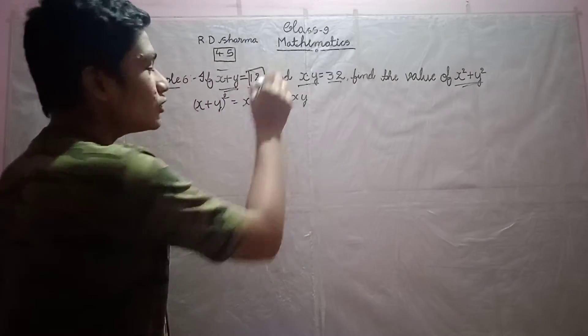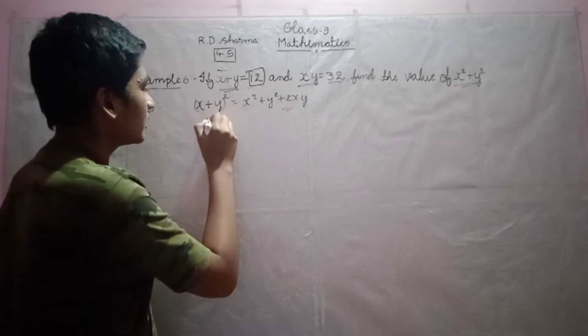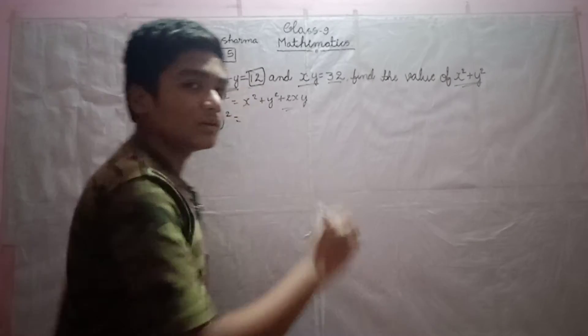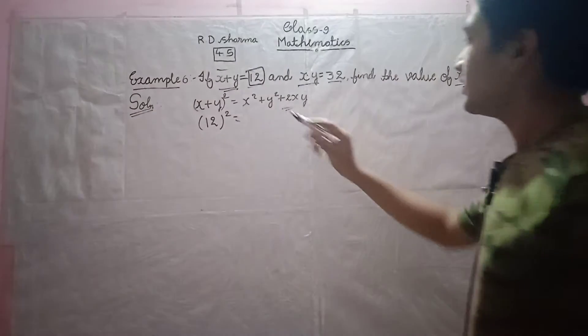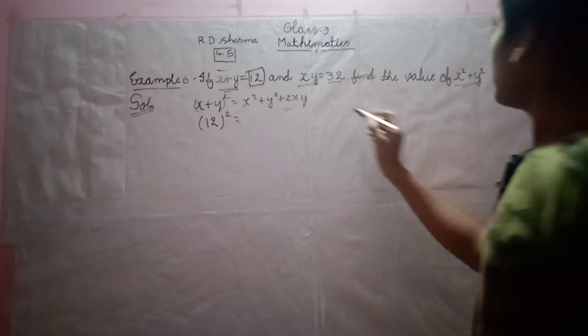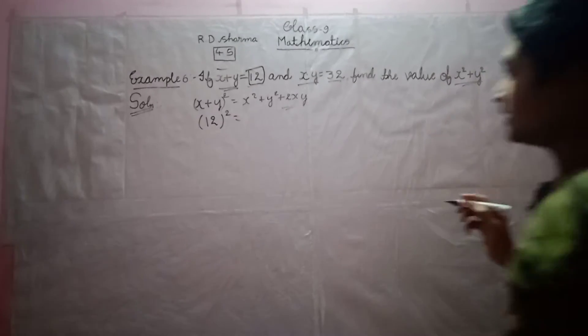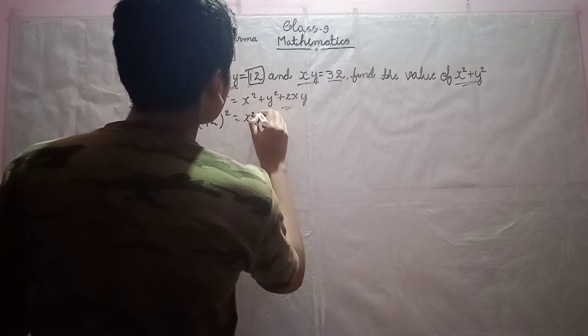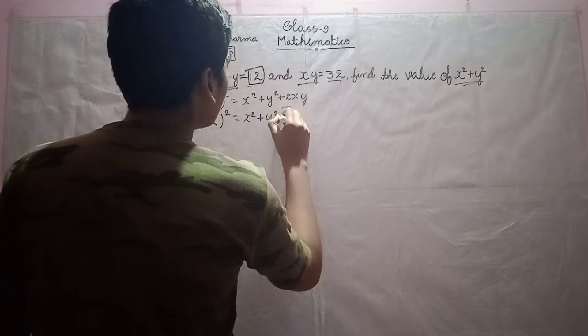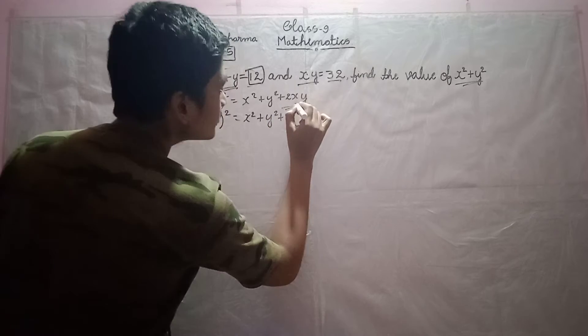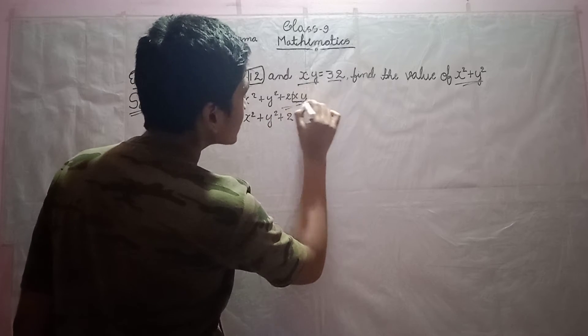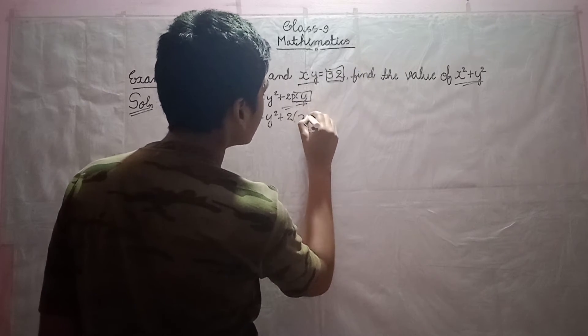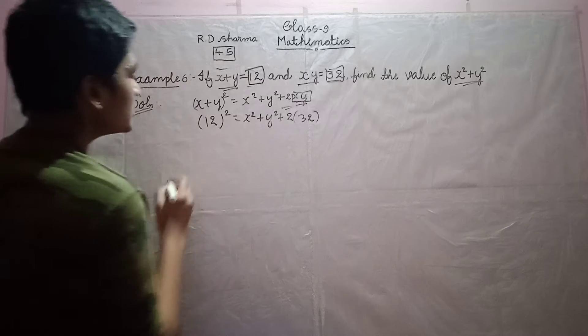We can substitute 12 in place of x plus y, and the square as it is. The next step is x square plus y square, which we need to find, x square plus y square plus 2. So, observe here, in place of xy, we can substitute this 32, right? Substitute 32.